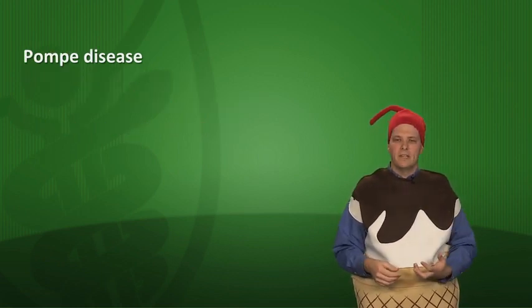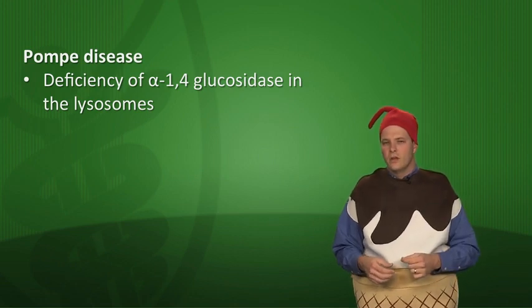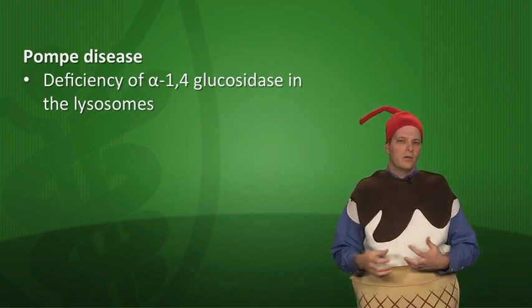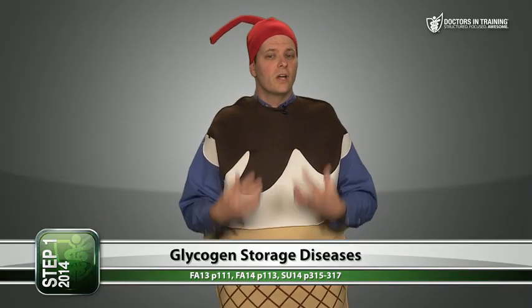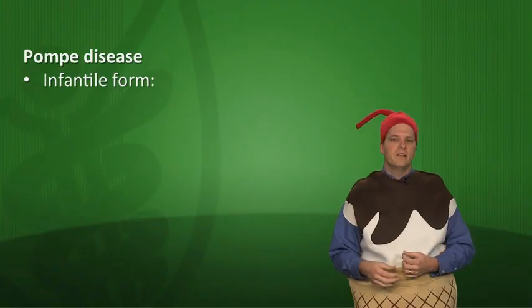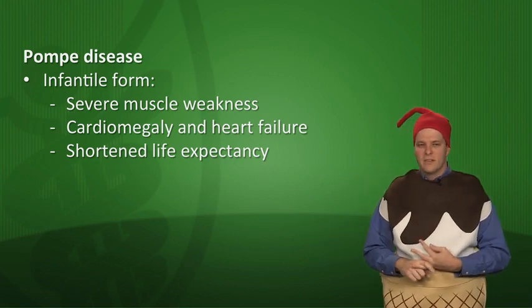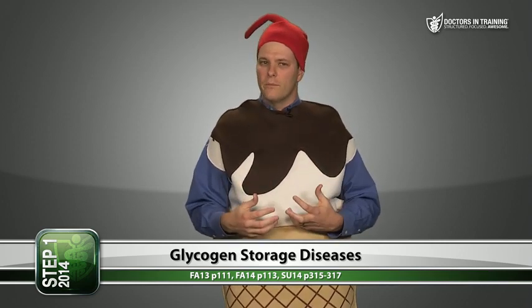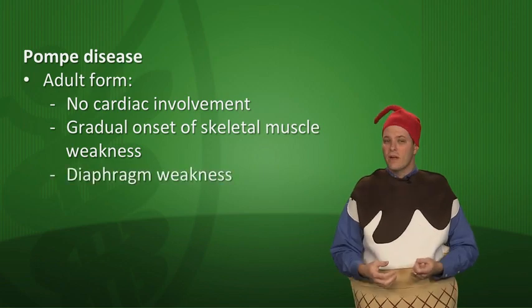Pompe disease, glycogen storage disease type 2, is caused by a deficiency of alpha-1,4-glucosidase in the lysosomes. There are two forms. The infantile form has very low enzyme activity, causing severe muscle weakness, cardiomegaly, heart failure, and a shortened life expectancy — usually less than a year if untreated. The adult or late-onset form has some but below-normal enzyme activity, with no cardiac involvement, gradual skeletal muscle weakness, diaphragm weakness, and respiratory failure.